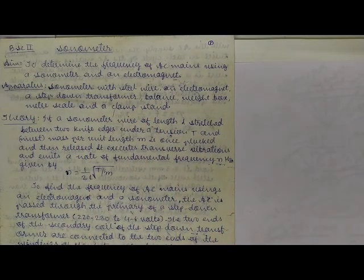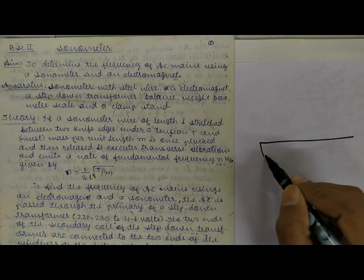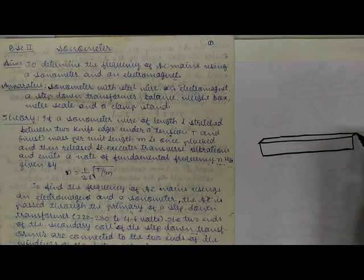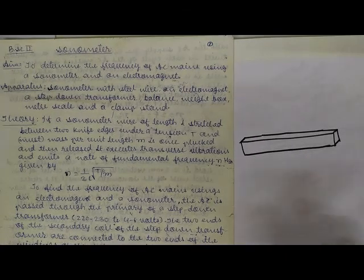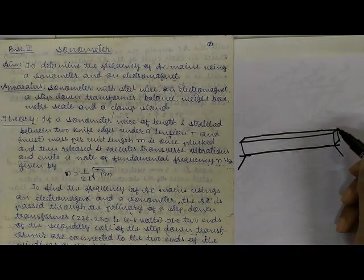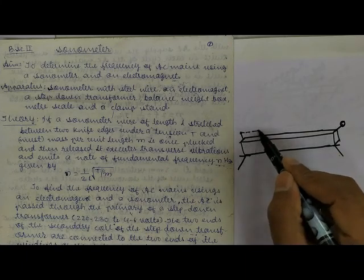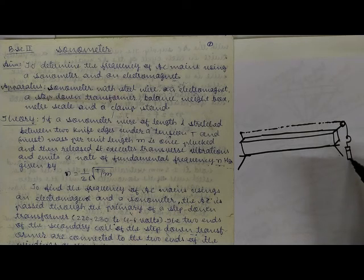We require one electromagnet. Let me draw the diagram. The sonometer is a wooden box placed on a table. It has a pulley at one end and a fixed end point. A metallic wire runs over the pulley, and at the hanging end there is a hanger to which we attach different weights.